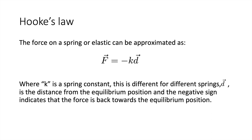Hooke's law can be used to describe the force on objects such as springs. It can be written as the force equals minus k times d, where k is some constant and d is the displacement from the equilibrium position. The negative sign indicates the force is directed back towards the equilibrium position, in the opposite direction to the displacement. For a spring, k is known as the spring constant and is different for different springs. The negative sign indicates a restoring force directed back towards equilibrium.